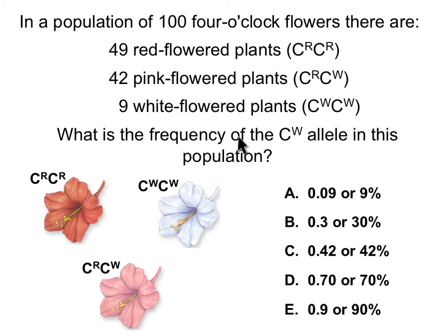The question is asking us: what is the frequency of the CW allele, or the recessive allele? You know that 9% of the plants equals Q squared. So one way of calculating the allele frequency is to get the square root of 9%, or the square root of 0.09, which is 0.3.